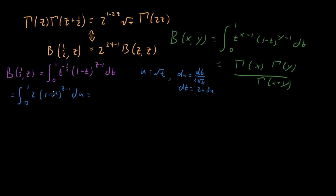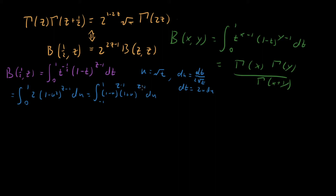We can note that this integral is even with respect to u — it's only a function of u squared — so we can drop the factor of two and extend the bounds to minus one to one. Then we factor one minus u squared as one minus u times one plus u, both raised to the z minus one. This is starting to look like beta of z comma z, but we have one minus u and one plus u rather than t and one minus t.